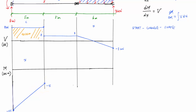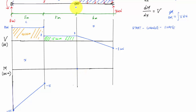Starting at negative 15 now. The concentrated force does nothing to the moment diagram. The change in moment is the area under the shear diagram — three kilonewtons times five meters gives 15 kilonewton meters. Changing positive 15 from negative 15 takes me to zero. And that zero is great because I have a hinge here — the internal moment at a hinge must be zero. So my moment diagram is correct up to the hinge.